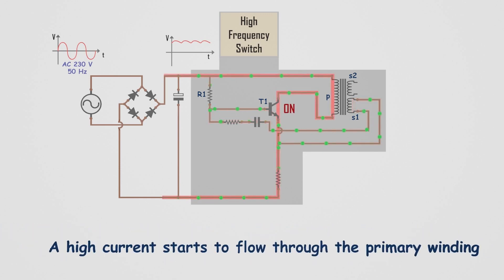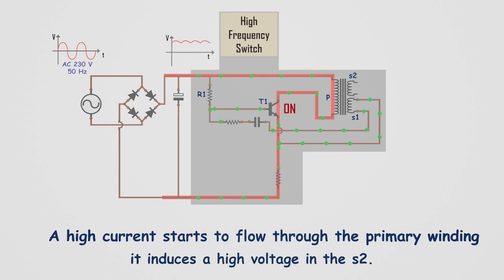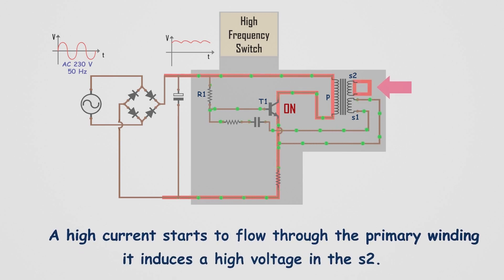allowing a high current to flow through the primary winding. As a result of the high current flowing through the primary winding, a high voltage is induced in the secondary winding S2 of the transformer.